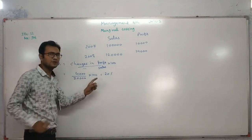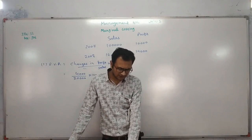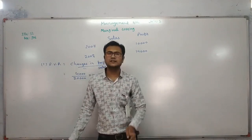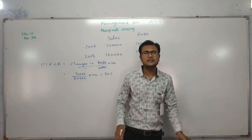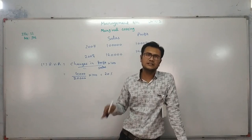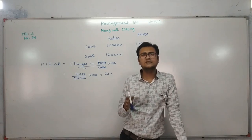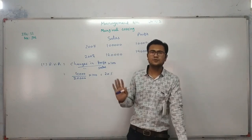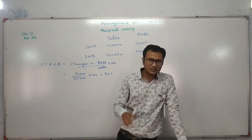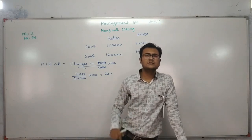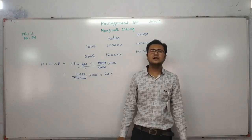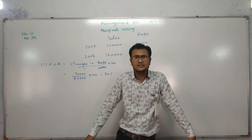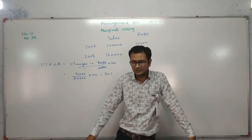PVR is 20%. The second question is profit when sales are 90,000 and 40,000. To find out profit, you must have information regarding cost as well as revenue, because revenue minus cost is the basic formula of profit. Cost here means variable cost as well as fixed cost. Since fixed cost information is not available, we will find it out first.